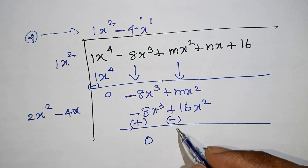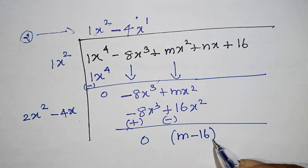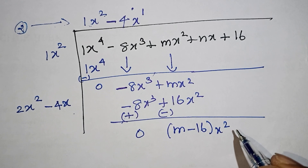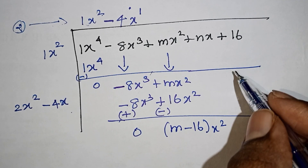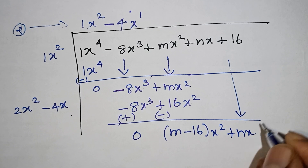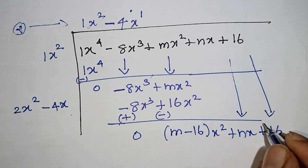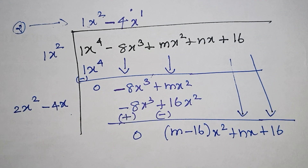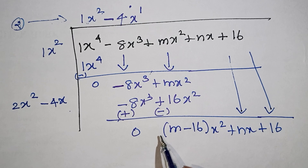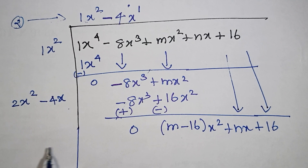Now here, m minus 16, x squared — x squared terms are common, so we have m minus 16 times x squared. We can add these 2 terms. Also nx plus 16 — 2 terms remain because we are doing perfect square division. So we can bring down these terms and add to the quotient.